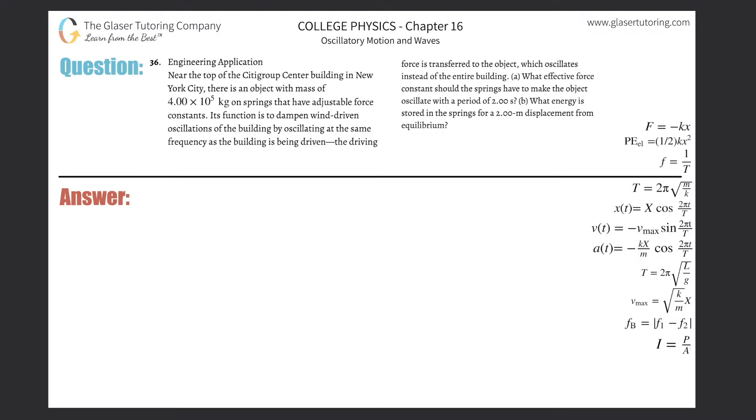Number 36, engineering application. Near the top of the Citigroup building in New York City, there is an object with mass of 4 times 10 to the 5 kilograms on springs that have adjustable force constants. Its function is to dampen the wind-driven oscillations. Letter A, what is the effective force constant should the springs have to make the object oscillate with a period of 2 seconds?